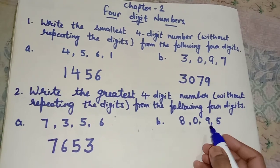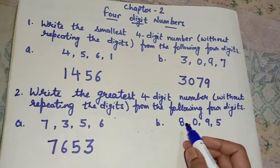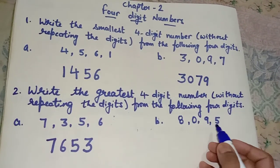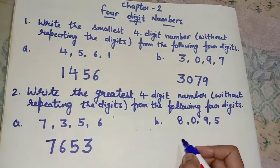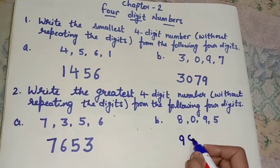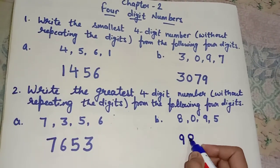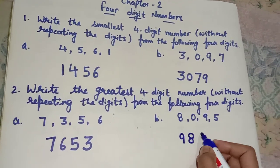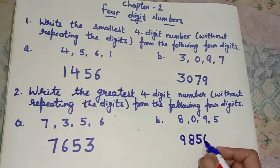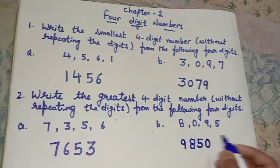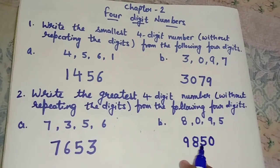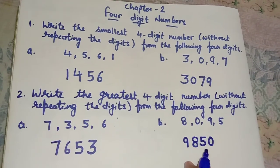First we will write the greatest number, so we compare 8, 9, and 5. Which number is greatest? 9. So we will write 9 first, then 8, then 5, and in the end we will write 0. So here we have the number 9,850.